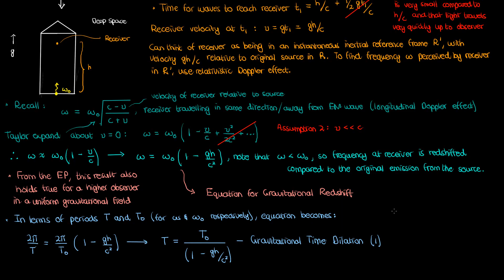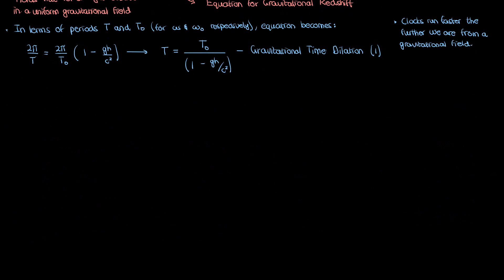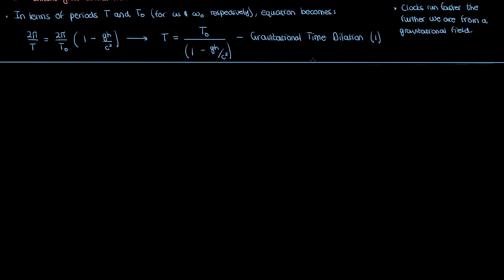Gravitational time dilation means that a clock ticking five seconds on the surface of a gravitational field is slower compared to a clock higher up in the field, which might tick by more than five seconds. When we go further away from a gravitational field, clocks run faster. This principle applies to any two events — not just wave signals. If someone on Earth has aged by 10 years, their twin sitting far away in deep space will have aged by slightly more than 10 years. Similarly, your head has aged slightly more than your foot because of gravitational time dilation. Granted, for a person 1.75 meters tall in Earth's gravitational field, the factor in the denominator is very close to one, but the effect is still there.